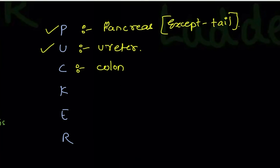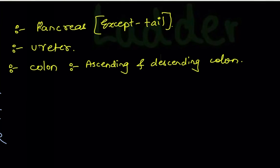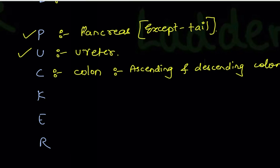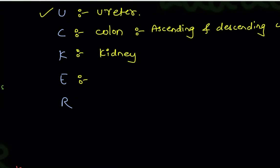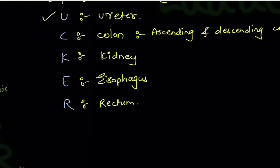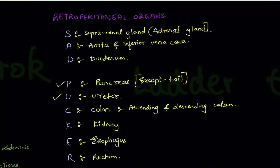C stands for colon — specifically the ascending colon and descending colon (sigmoid colon always goes along with descending colon); the transverse colon is intraperitoneal. K is for kidney — which we covered in the previous video as retroperitoneal. E stands for esophagus, and R stands for rectum.